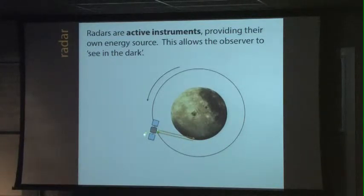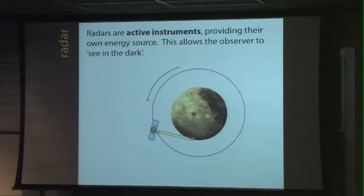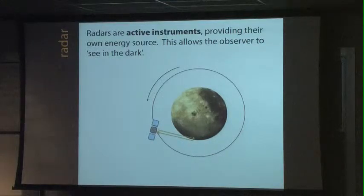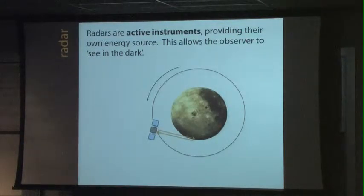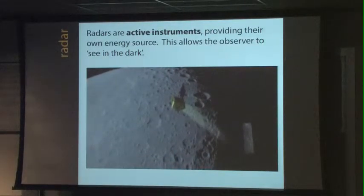This here is what's known as a monostatic configuration, where you're transmitting and receiving at the same place — in this case on board LRO in its polar orbit. We'll also be talking about a bistatic configuration later in this talk, where your transmitter and receiver are in two different places. This may actually be a better way to look for ice, as I'll discuss later.